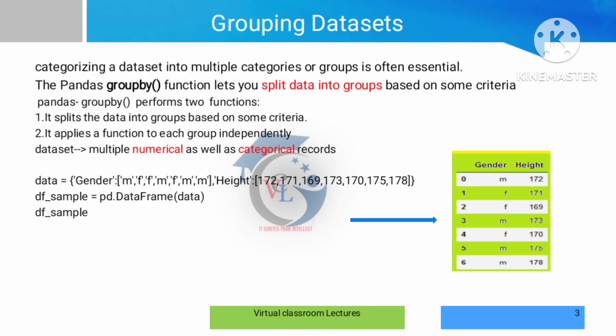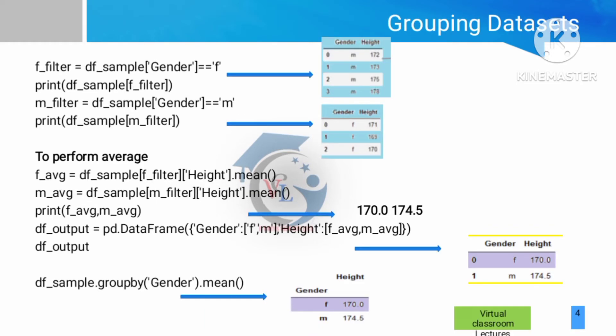We are going to group by gender — male and female. We are going to categorize and group the data. In the filter code, we set gender equal to F for female categories and do a grouping and print it.